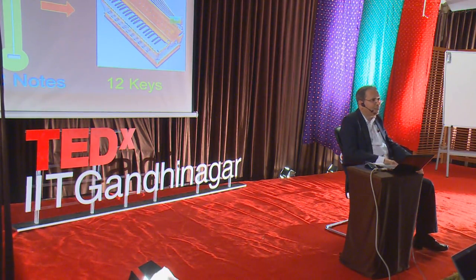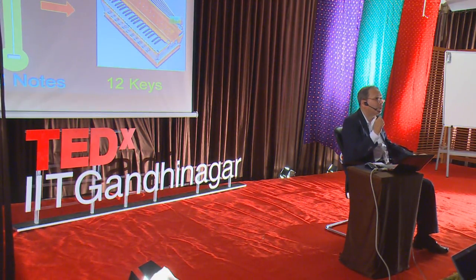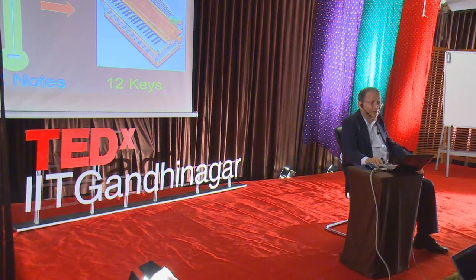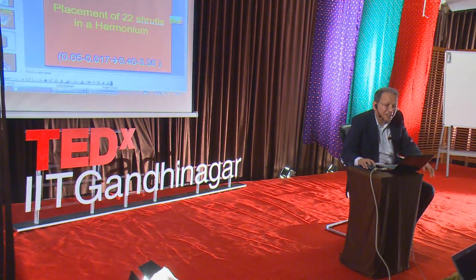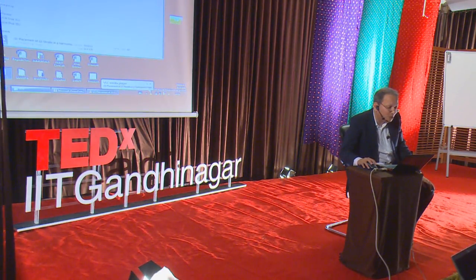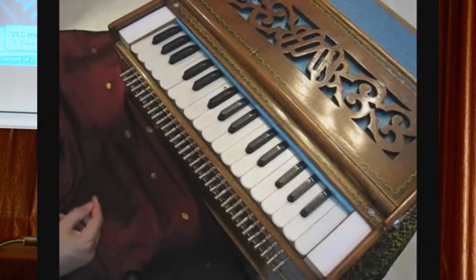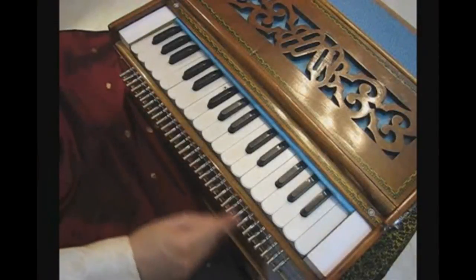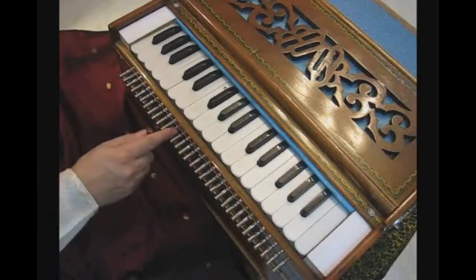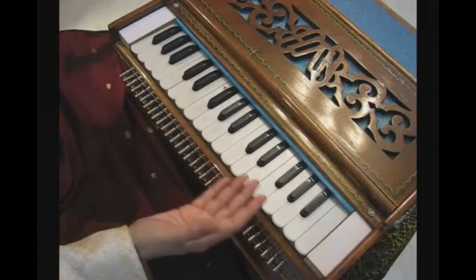The major challenge was how to transpose these 22 nodes into the 12 keys of a harmonium. We had to do a lot of internal structuring and restructure the harmonium to place 22 Shrutis under 12 keys. This is a 22 Shruti harmonium, provided with extra knobs to accommodate all 22 Shrutis. I shall now demonstrate how we can play all 22 Shrutis in one scale.